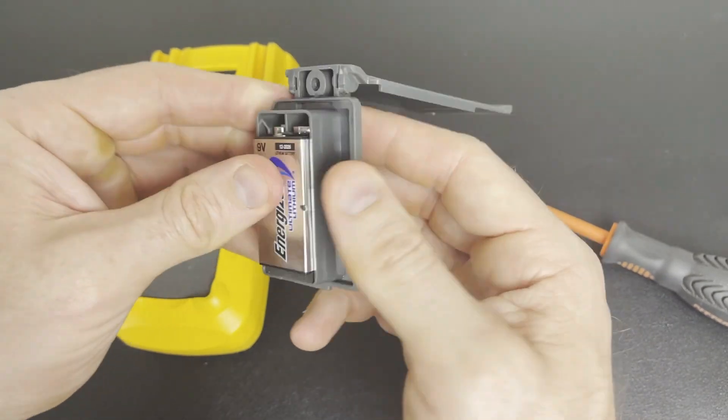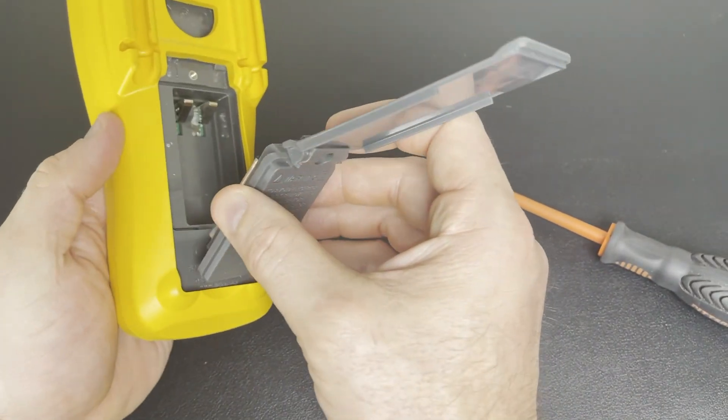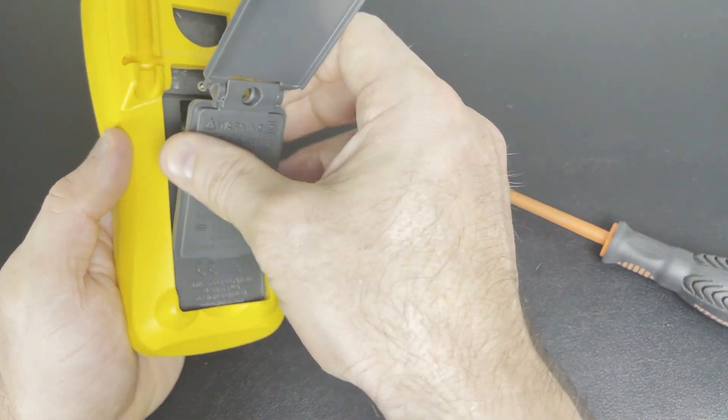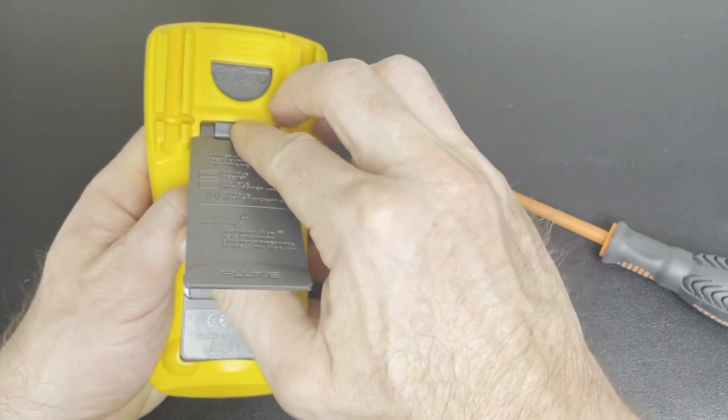Push it in. Now take your flap, put this little tab in down here first, then close it up top.